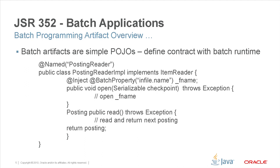Continuing our look at batch programming artifacts, here's a short example showing what one of them might look like. The batch artifacts are simple POJOs. These POJO interfaces define the essential contract with the batch runtime. What we see here is an item reader used in that read-process-write loop. You can see key interface methods such as open and read that the batch runtime uses to first open the reader and then iteratively read from it, passing items on to the processor artifact and then the writer artifact, doing that iteratively until all input is exhausted, transactionally checkpointing along the way to ensure restartability.